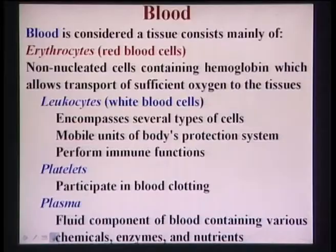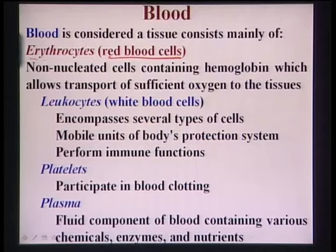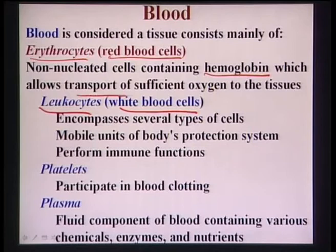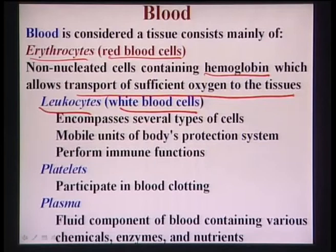Blood is considered a tissue, primarily consisting of erythrocytes - the biological name for red blood cells - and leukocytes, which are white blood cells. RBCs are generally non-nucleated cells containing hemoglobin, which allows transport of sufficient oxygen to tissues. Oxygen attaches to the hemoglobin of RBCs and is thereby transported to different parts of the body.